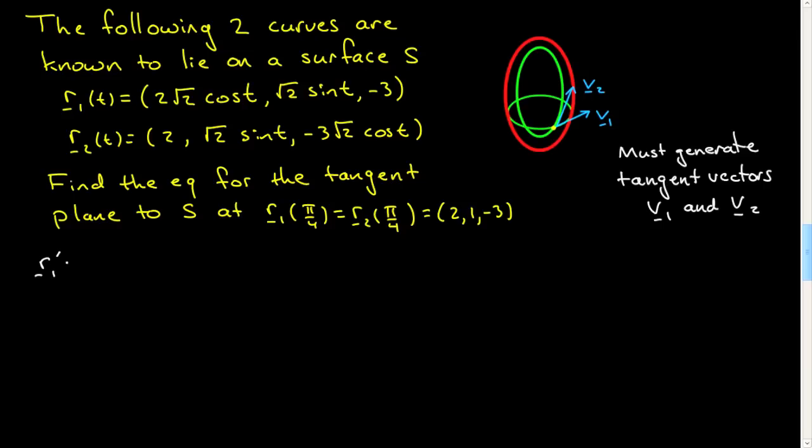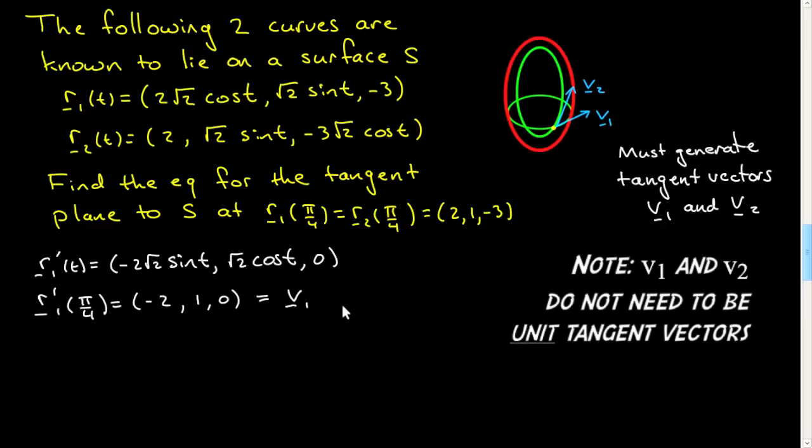We're going to compute, we're going to start with R1. Let's differentiate it. The derivative of cosine is minus sine: 2 minus √2 sin t. The derivative of sine is cosine, and zero. So let's evaluate that at this point π/4, and that'll give us (-2, 1, 0). So that's our vector V1.